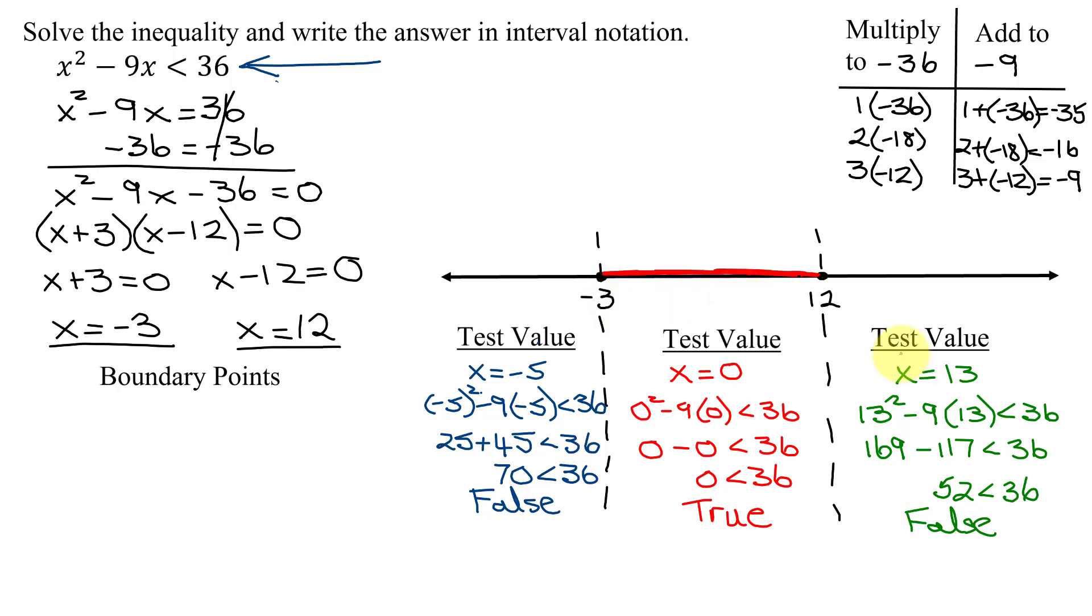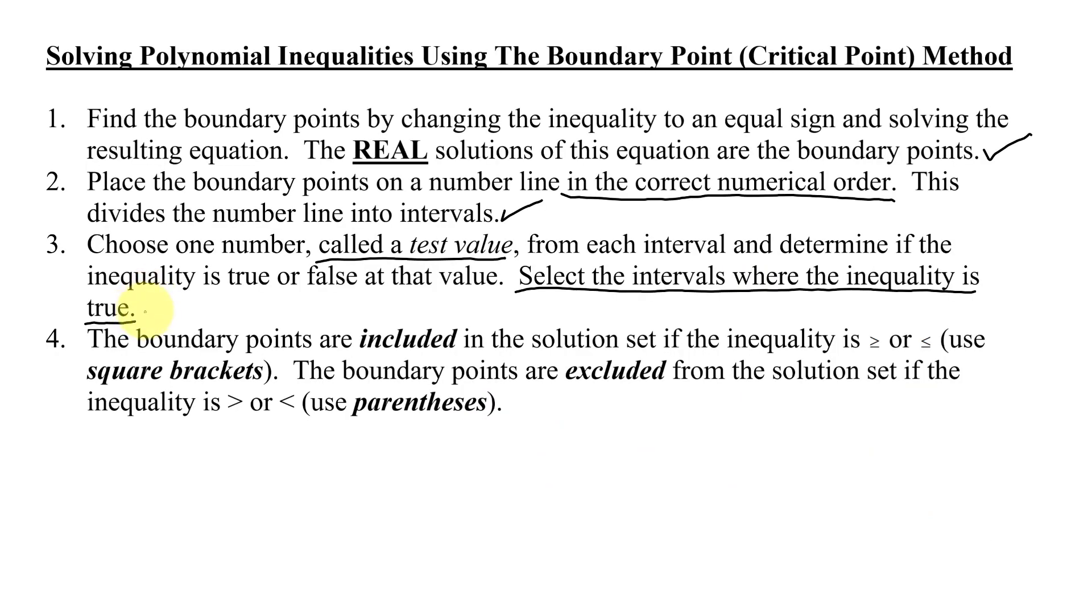In the last region, I picked as my test value x equals 13. Does 13 squared minus 9 times 13, is that less than 36? Is 52 less than 36? That is false. So I do not want that region. So we have now completed step 3.